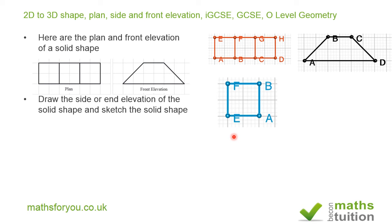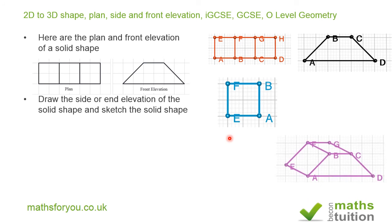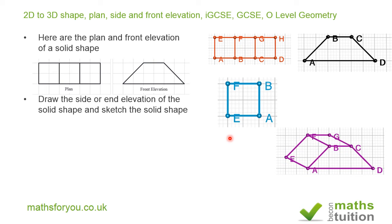The solid shape would be something like this one here, with the letterings in as well. In this case, the length of BA will not be 2 — it will actually be 2√2. So that would be the length of BA. Whereas the length of BA on the side or end elevation is 2, the length of BA on the solid shape is going to be 2√2. That's just √(2² + 2²) = √8 = 2√2.